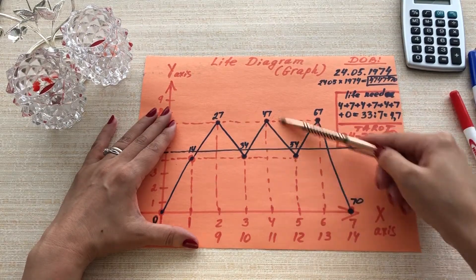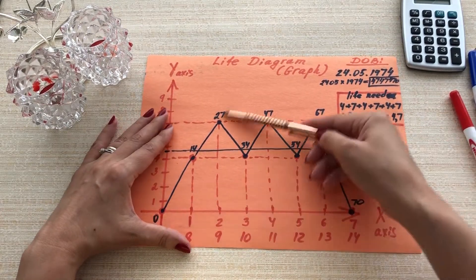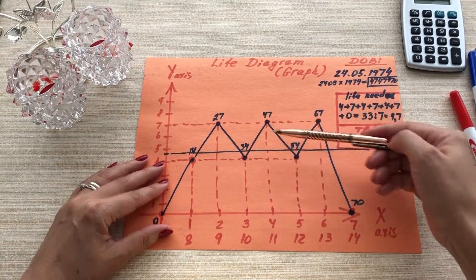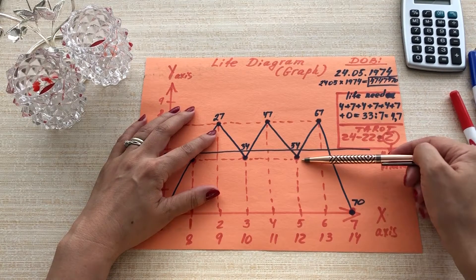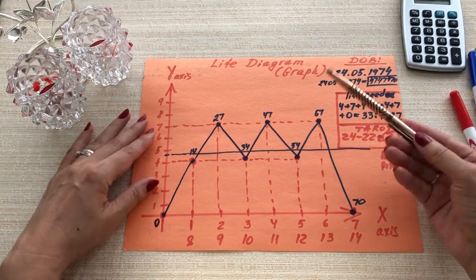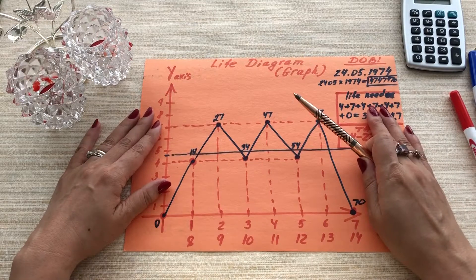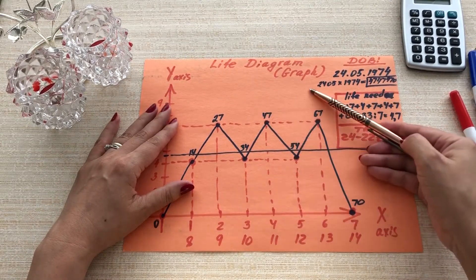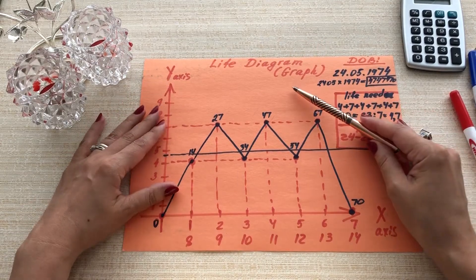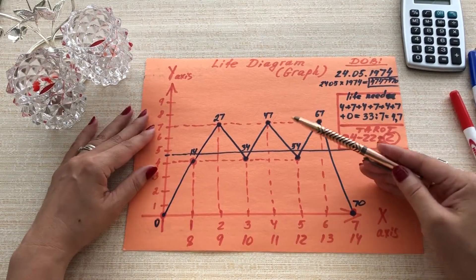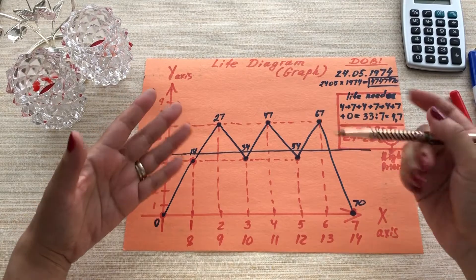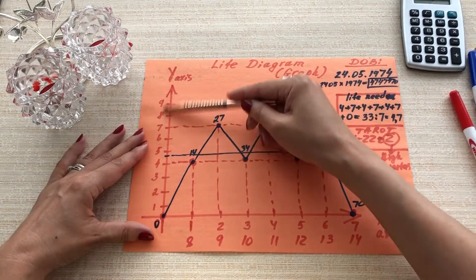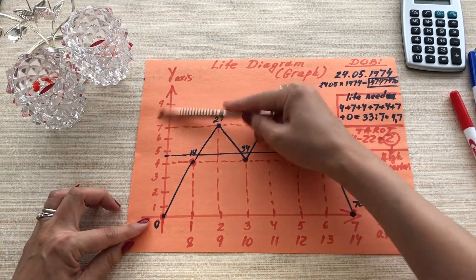I will explain what ascending lines and descending lines mean and at what age things are going to happen. Why do I like this method? In numerology there are a few ways to calculate your life graph, but this one is my favorite. Because it's so easy for people, even for those of you who don't know anything about numerology. I will just give you some basic information about this.